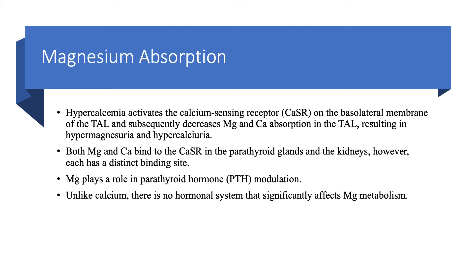Magnesium plays a modulating role with regard to parathyroid hormone. Unlike calcium, there is no complete hormonal system that significantly affects magnesium metabolism. With calcium and phosphorus, we have PTH, vitamin D, and FGF23 — this doesn't exist with magnesium. Perhaps there is something we have not yet discovered.